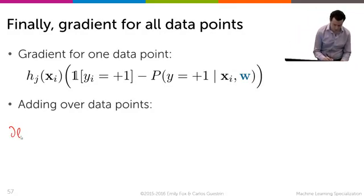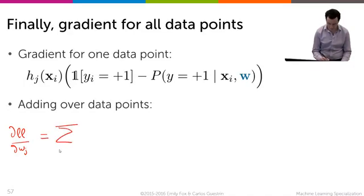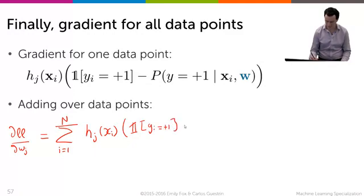Now if you want to compute the derivative of the likelihood function for all of the data points with respect to w_j, all you have to do is sum. So you just sum over the data point - sum over i equals 1 through n of the term above. So h_j of x_i that multiplies the difference between the indicator of y_i equals plus 1 minus the probability y_i equals plus 1, given x_i and w.